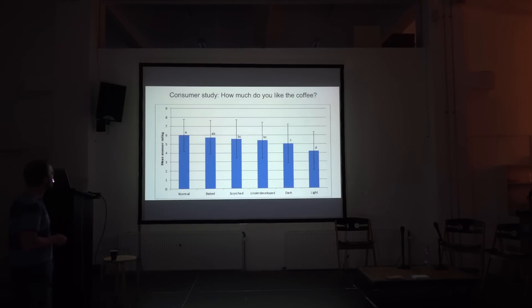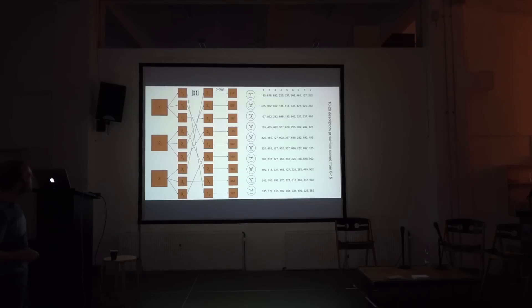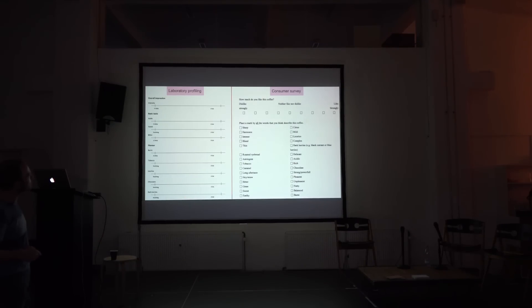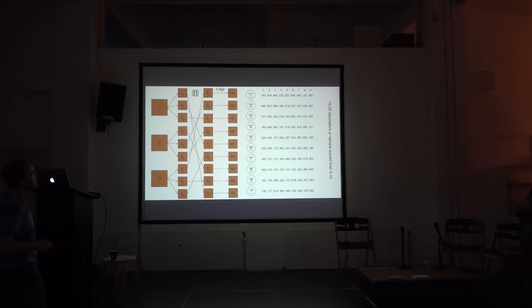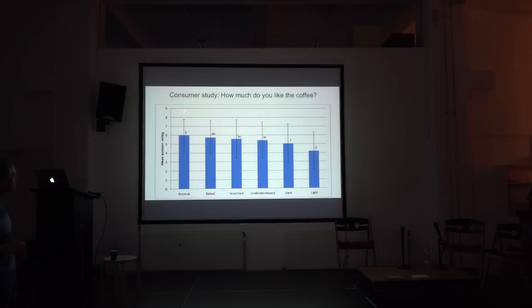And interestingly enough, you can see here, balance, pleasant, and harmonic, our three meta descriptors were highest for the normal. And also sweetness. And you can see that also in a barcode here. The normal was preferred. They were also asked, how much do you like the coffee? This is the overall hedonic score. And the normal was preferred. You can see statistically, this sample is part of the A cluster and the B cluster. But it seems like there's a trend.